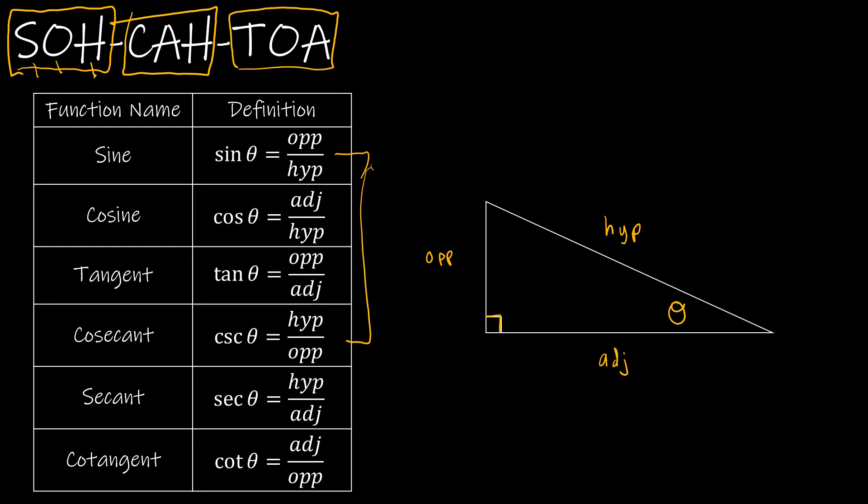Similarly, if I look at cosine adjacent over hypotenuse, secant is hypotenuse over adjacent. And then tangent opposite over adjacent, cotangent is adjacent over opposite.